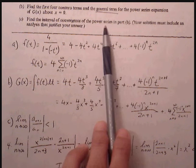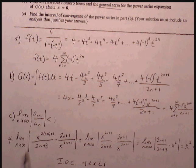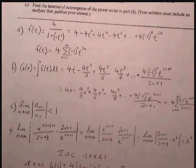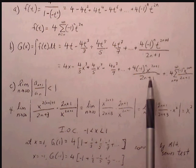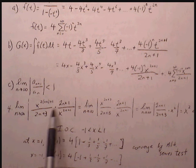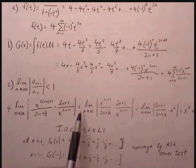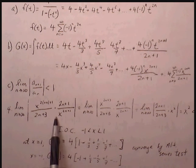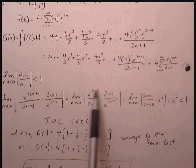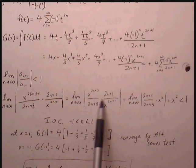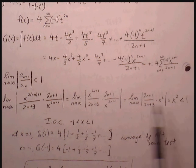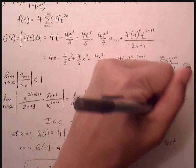Part C: find the interval of convergence. Now that we have the general term, we can use the ratio test to determine the interval of convergence. We compute |a_(n+1) / a_n|: that's |x^(2n+3)/(2n+3)| divided by |x^(2n+1)/(2n+1)|, which simplifies to |x²| · (2n+1)/(2n+3). As n approaches infinity, (2n+1)/(2n+3) → 1, so we're left with |x²| < 1, meaning the interval of convergence is between -1 and 1.